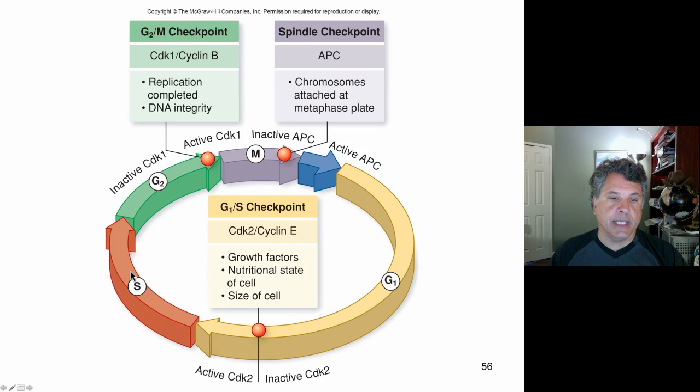And at the G2 mitotic transition there is a G2M checkpoint run by CDK1 and cyclin B. And the cell is asking itself has replication been completed? Is all my DNA replicated? Is my DNA intact? Has there been DNA damage? If either of these are not appropriate then the cell will be arrested at the G2M checkpoint until such a point at which things are copacetic and then we can enter mitosis.